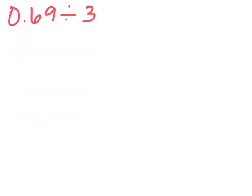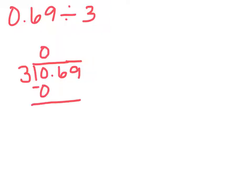Let's divide 69 hundredths by 3. We begin by setting this up in a long division problem just like this. First, we divide the ones by 3: 3 goes into 0 zero times, and now we bring down our 6. Don't forget to bring your decimal point straight up at this point and put it between your ones and tenths. Next, let's divide the tenths by 3: 3 goes into 6 tenths 2 times. 2 times 3 is 6, so we'll put our 6 here.